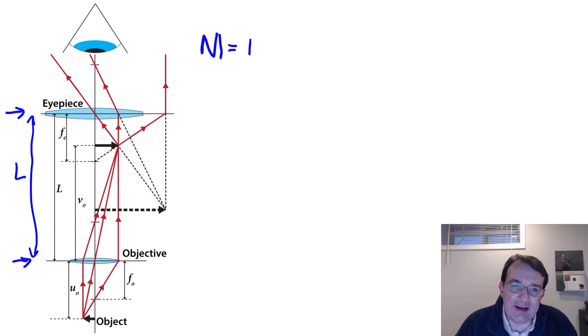We've already calculated the magnification factor for the eyepiece because we know it's acting exactly like a magnifying glass. So we can write this out as the magnification of the objective multiplied by d over fe plus one, where fe is the focal length of the eyepiece.